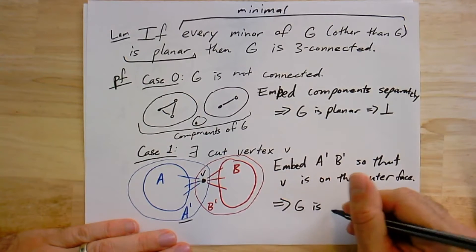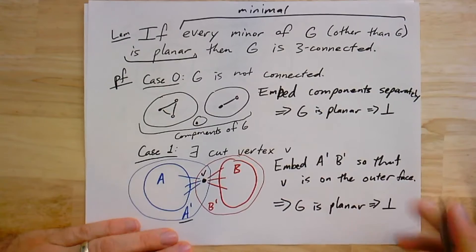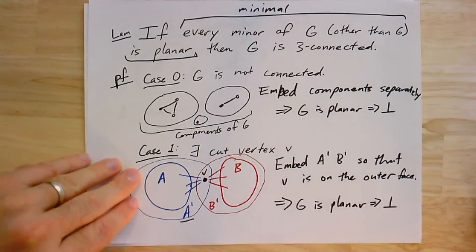If I glue the embedding of A prime and the embedding of B prime as I embed them next to each other so they overlap with V, then I actually have an embedding of G. That would imply that G is planar. I know it's planar because I just constructed an embedding, which again is a contradiction. We assumed G was not planar.